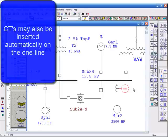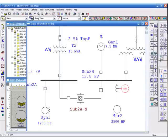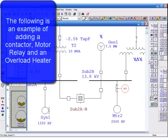CTs may also be inserted automatically on the one line. The following is an example of adding a contractor, motor relay, and an overload heater. Please observe.